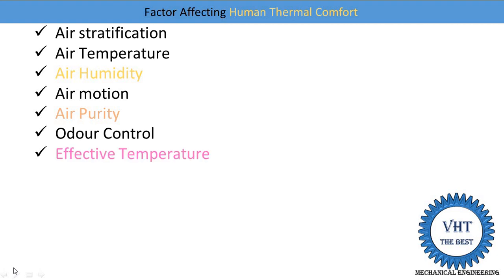The next factor is effective temperature. Effective temperature is a combination of air temperature, air humidity, and air motion. All three factors are combined to produce one effect known as effective temperature. The effective temperature range is 19 to 22 degrees for different seasons, winter and summer, within which we feel comfortable. If you want to learn more about effective temperature, a link is provided on the top right of your screen.